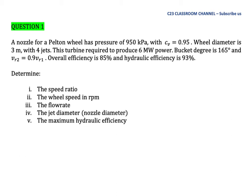Turbomachinery Pelton Wheel Tutorial Question No. 1. A nozzle for a Pelton wheel has pressure of 950 kilopascal with Cv equal to 0.95. Wheel diameter is 3 meters with 4 jets. This turbine is required to produce 6 megawatt power. Bucket angle is 165 degrees and VR2 is equal to 0.9 VR1. Overall efficiency is 85% and hydraulic efficiency is 93%. Determine the speed ratio, the wheel speed in RPM, the flow rate, the jet diameter or nozzle diameter, and the maximum hydraulic efficiency.